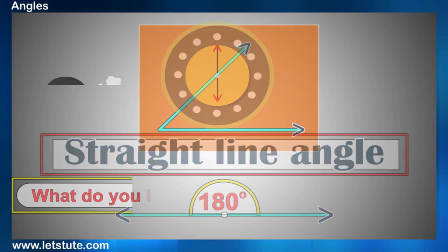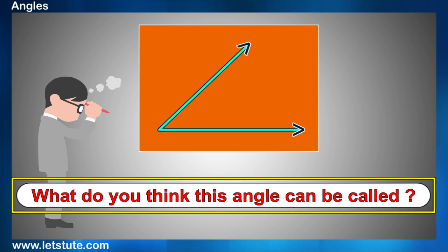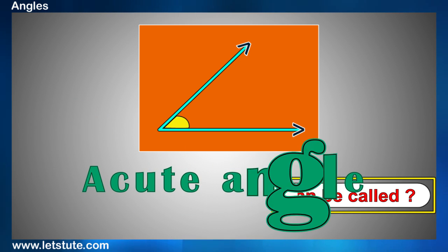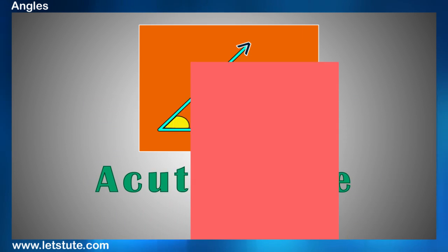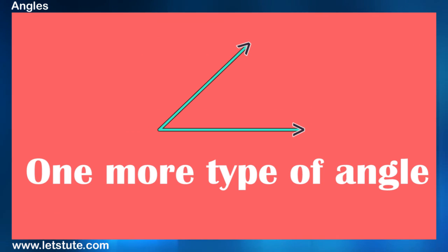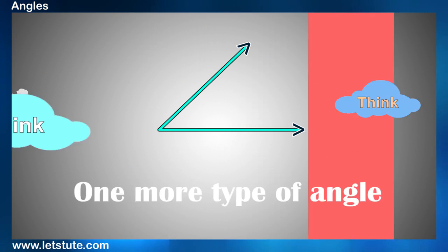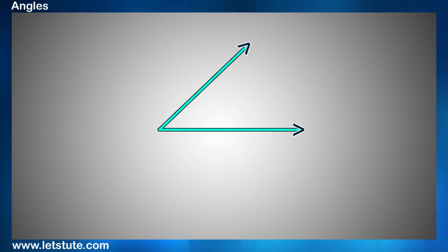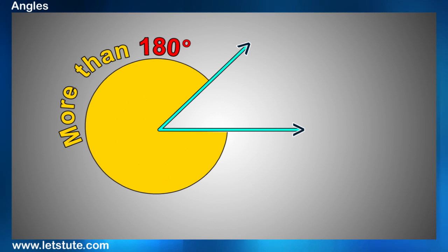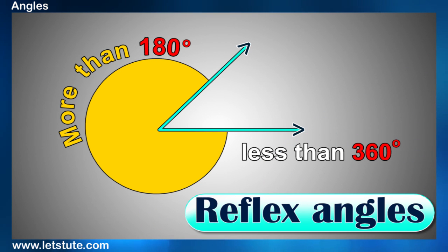Well, what do you think this angle can be called as? So if you guys said that it's an acute angle, then you're correct. But then we do have one more type of angle in here. Can you think what it will be? The measure of these angles is more than 180 degrees and less than 360 degrees. And such angles are called as reflex angles.